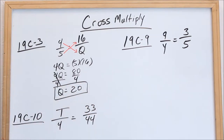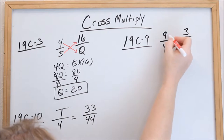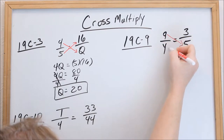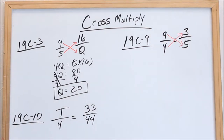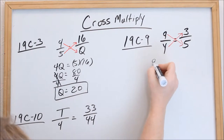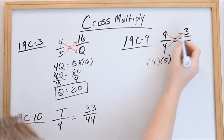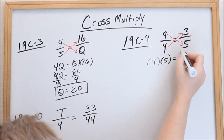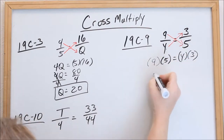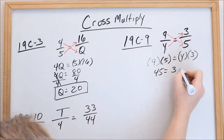Let's look at 19c9. Again, when you have one fraction set equal to another fraction, cross multiplication. This times this set equal to this times that. I recommend you write these little arrows in your problems. That means 9 times 5 set equal to y times 3. 9 times 5 is 45. When we say y times 3, we write it as 3y.